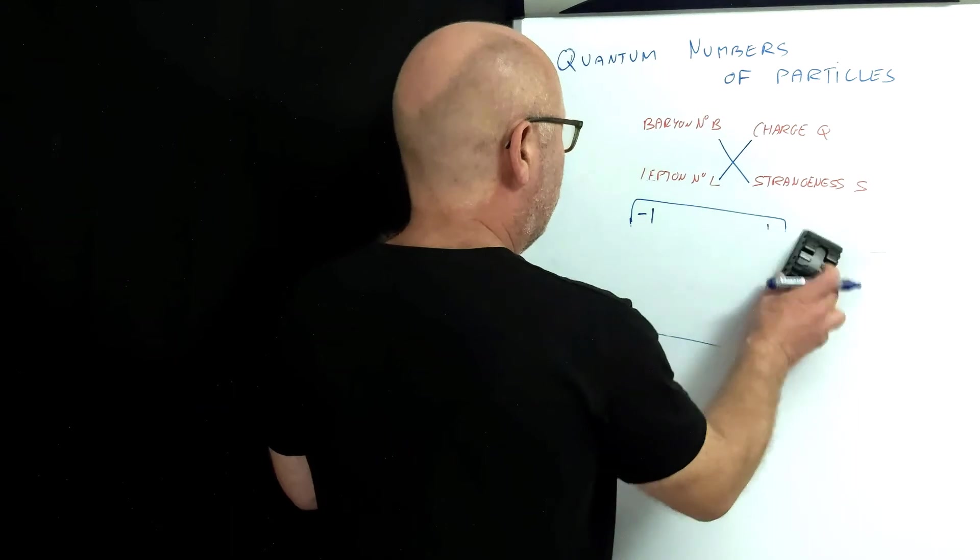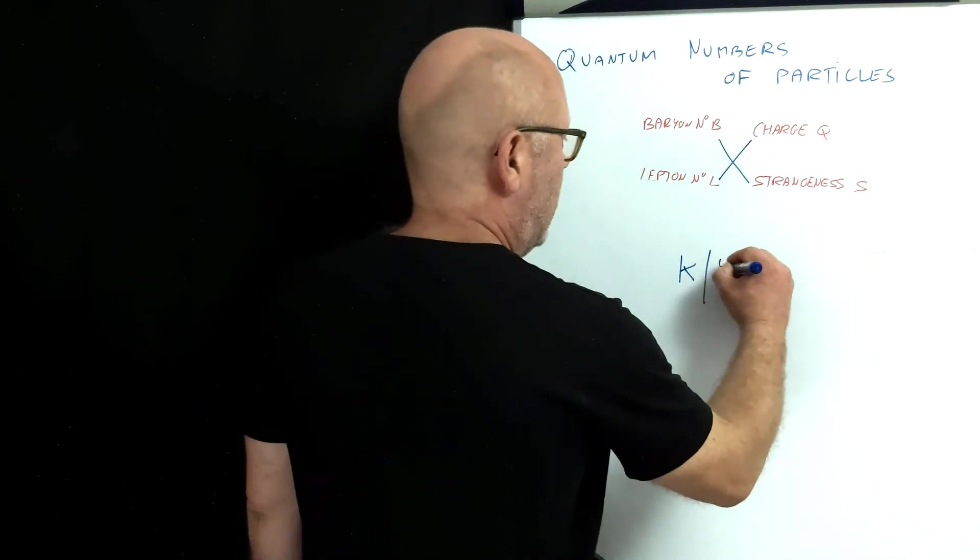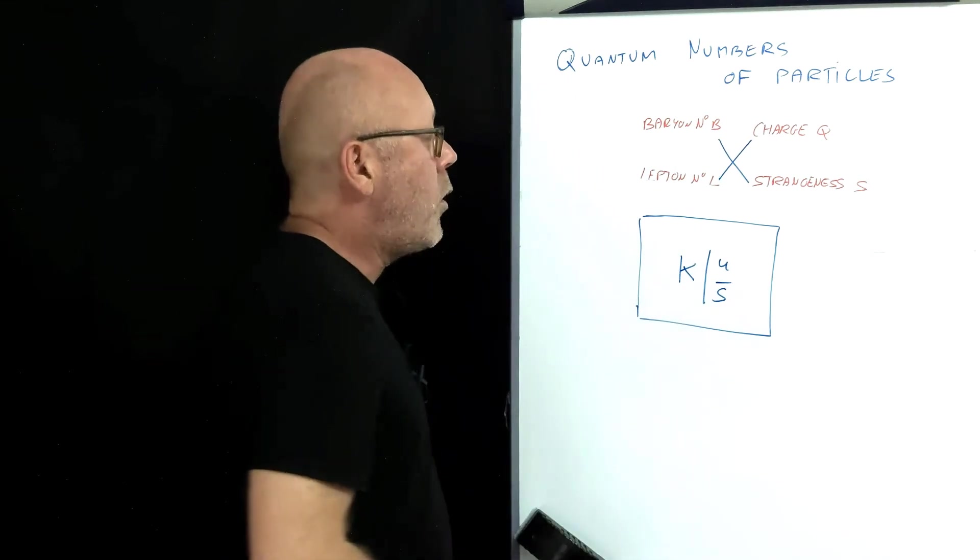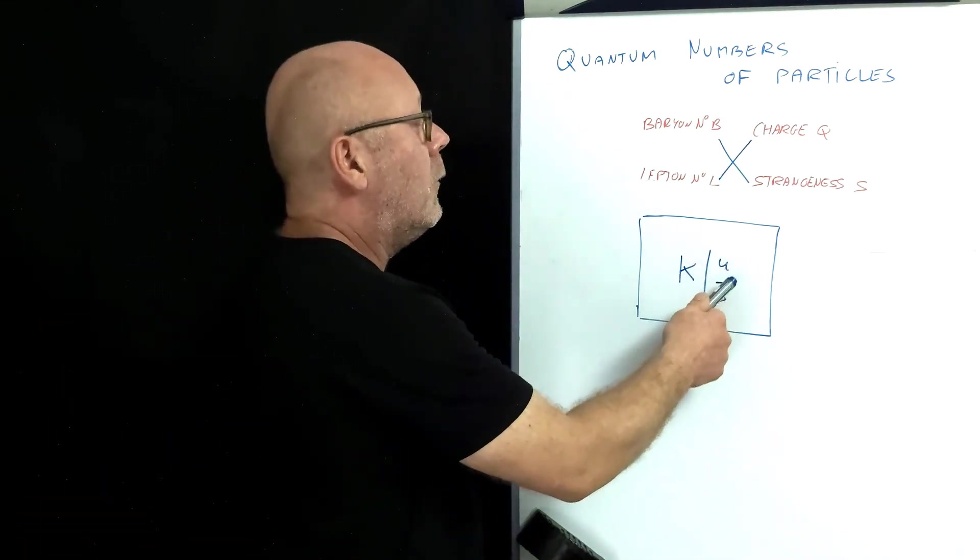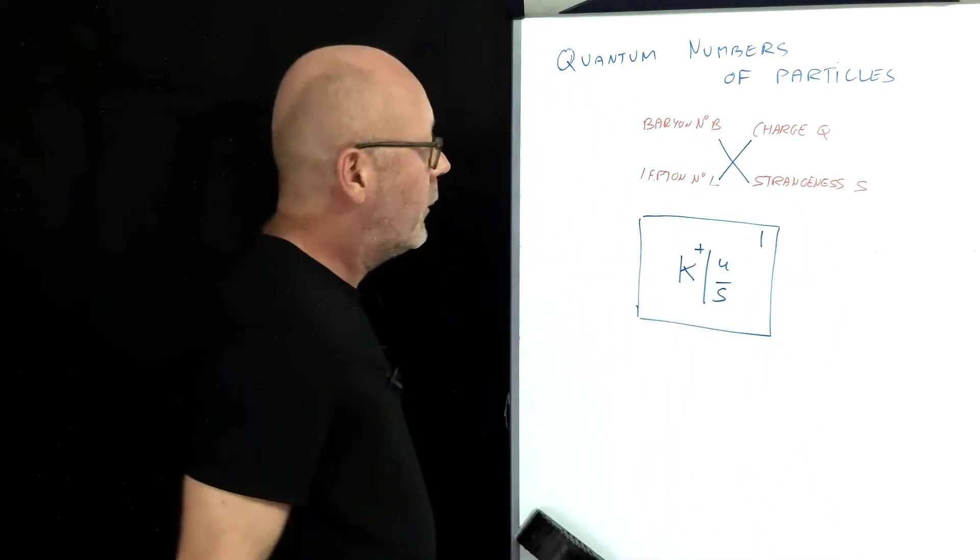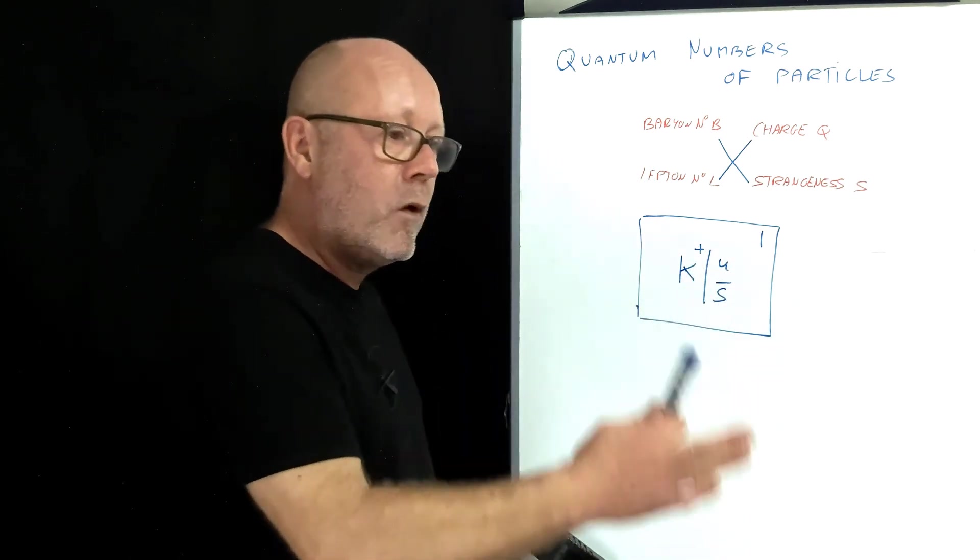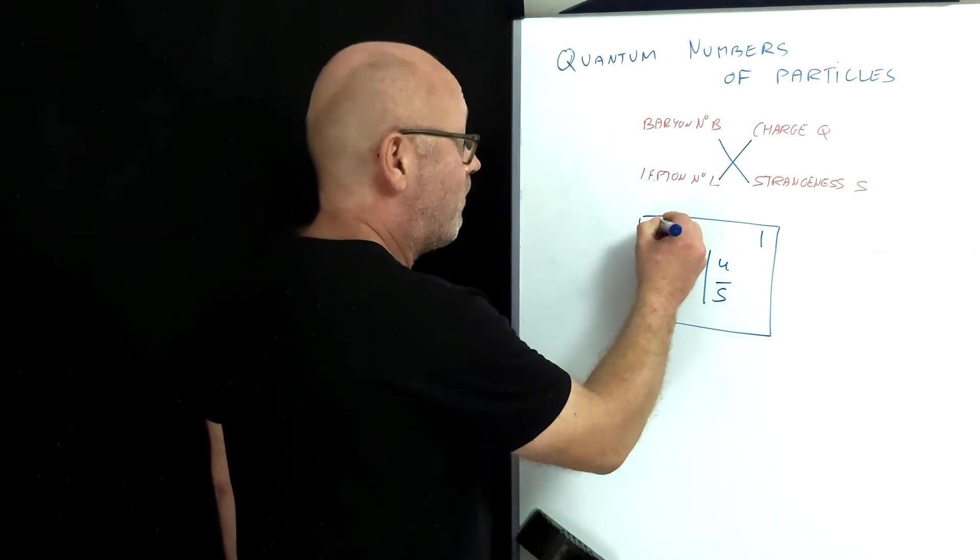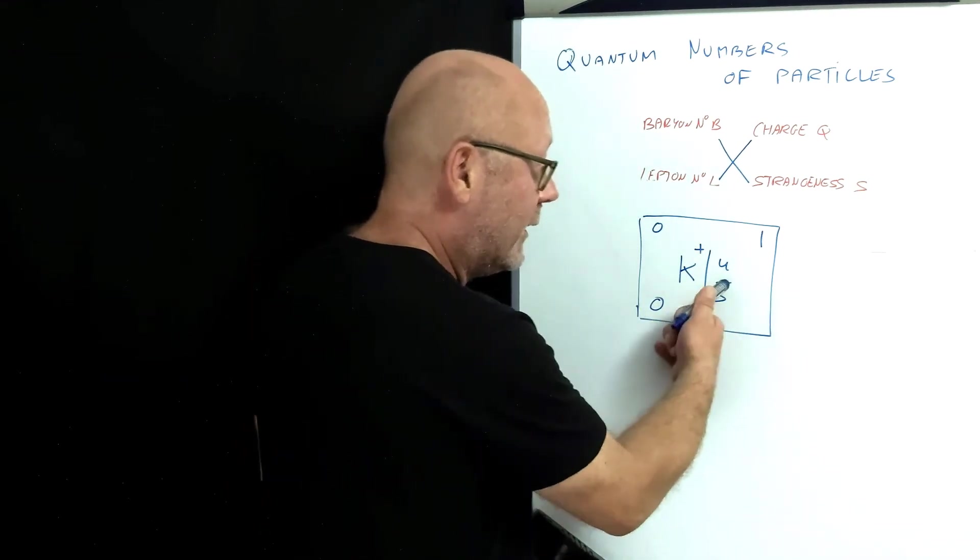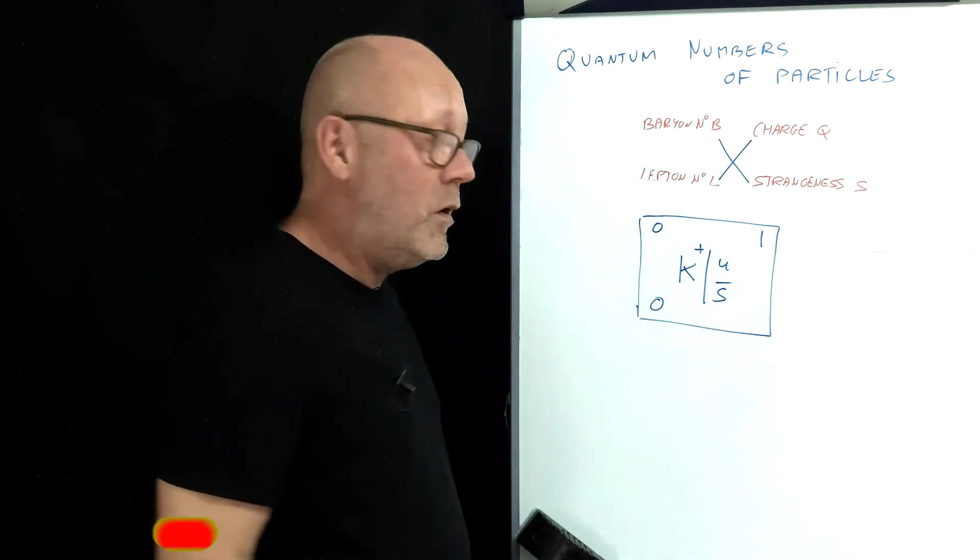Let's consider a meson now. Let's take a kaon, for example. Let's take this one: up, anti-strange. What would be the charge? Two thirds minus minus one third, so it's one. So it would be a K-plus, actually. Then the baryon number. Well, you see, you've got a quark and an anti-quark, so it gives you a third minus one third, so zero. It's not a baryon. Lepton number? Zero. Strangeness? Yeah, there's a strange quark. And here, because it's an anti-strange, the strangeness number will be plus one.